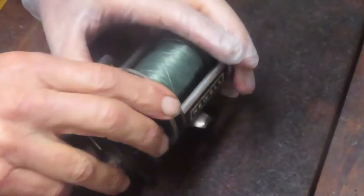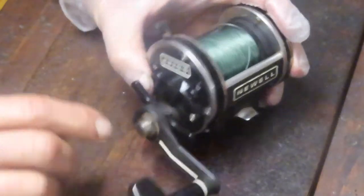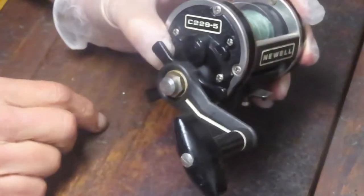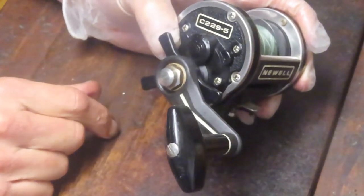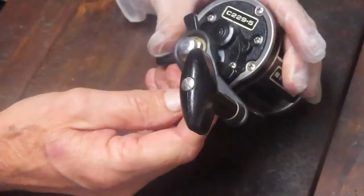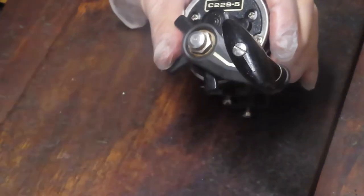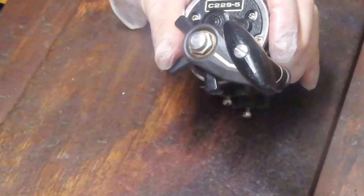So we're going to show you how to take it apart, service it, put it back together. Notice that the star adjuster has a missing leg on it, and boy those are hard to find. So we'll do what we can do to make this one go fishing again.